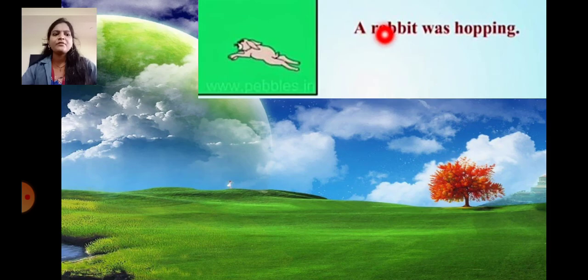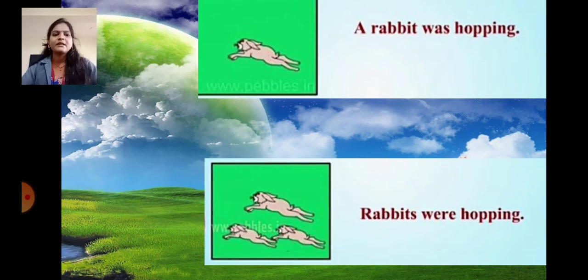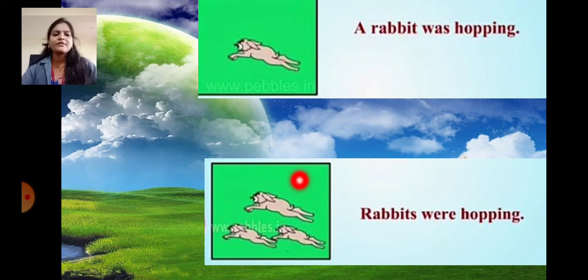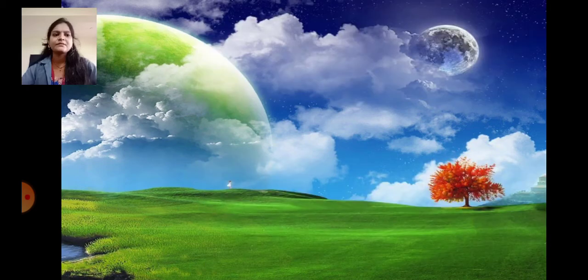The rabbit was hopping. The rabbits were hopping. Here only one rabbit, so was is used. Here more than one rabbit, so were is used.